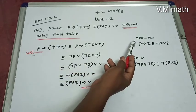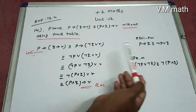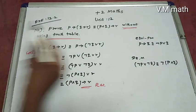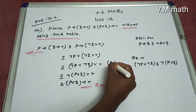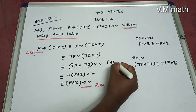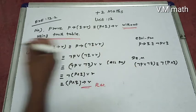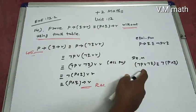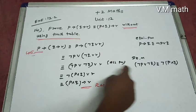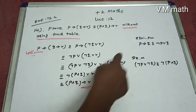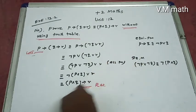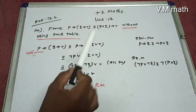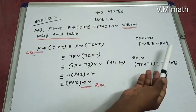To summarize: if you have an implication, apply the equivalence property to change it. Then apply De Morgan's law to change the grouped negation. Finally, apply the equivalence property again to reach the equivalent statement. These are the key properties used in this proof.